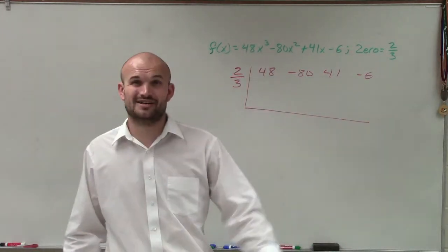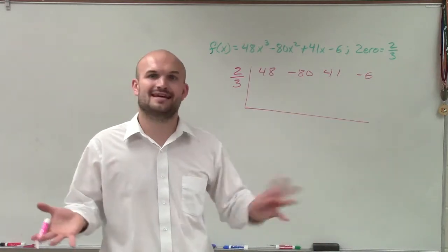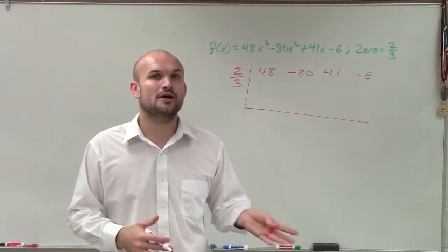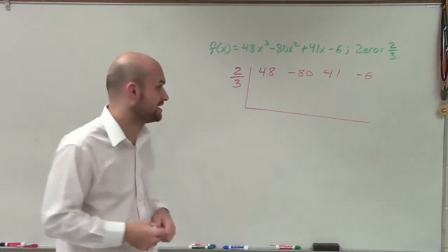And what's nice about when given a zero is you know that the zero is going to divide evenly. So if you make a mistake on your synthetic division and you get a remainder, you can just go back and check your algebra or your arithmetic and see what you did incorrectly.